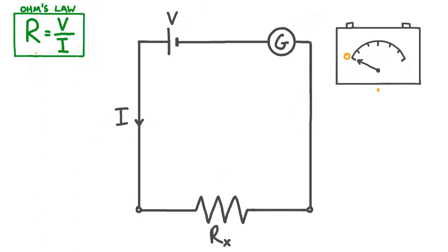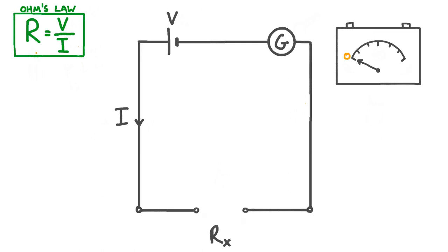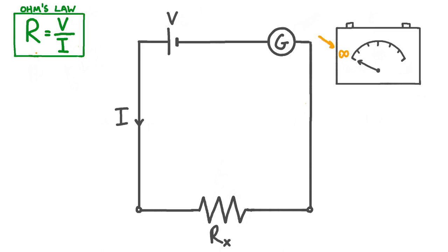Because we're trying to build an ohmmeter, we'll want to change the dial on our galvanometer so that it shows resistance rather than current. Ohm's law tells us that if the current in our circuit is really small, then the resistance must be really big, and similarly if we're getting a really big current, then it must mean that the resistance is small. If a circuit has zero current, then it must have effectively infinite resistance — equivalent to a break in the circuit. So we can change the dial so that zero current reads as infinite resistance, and the other end of the scale corresponds to zero resistance.